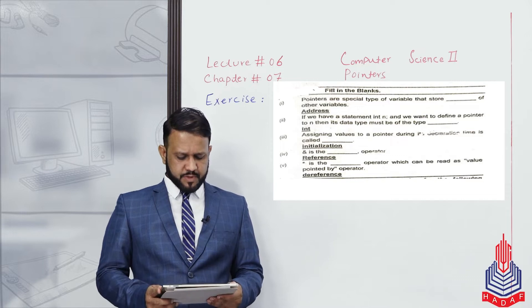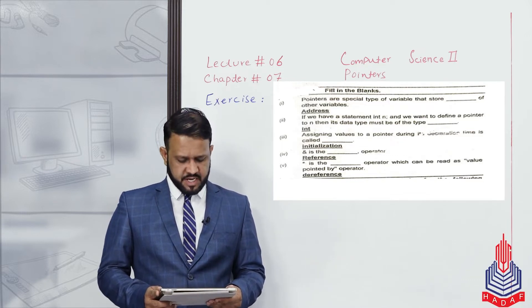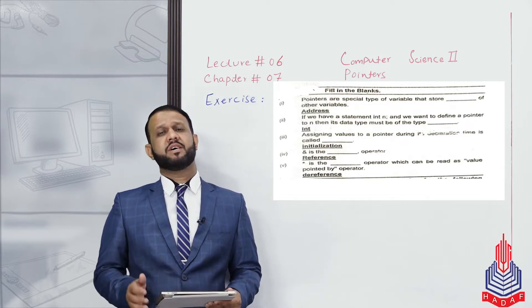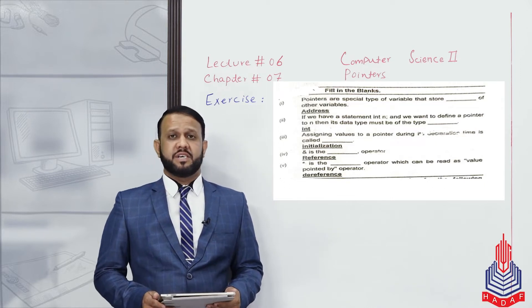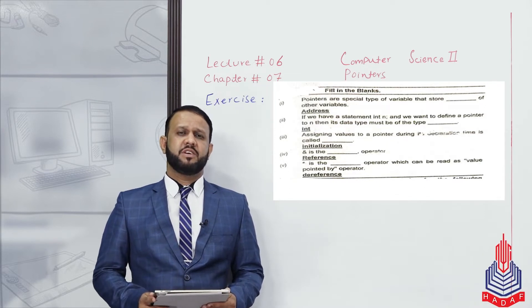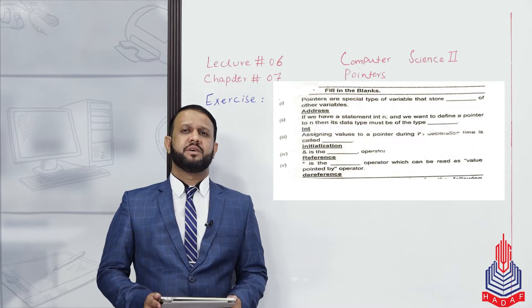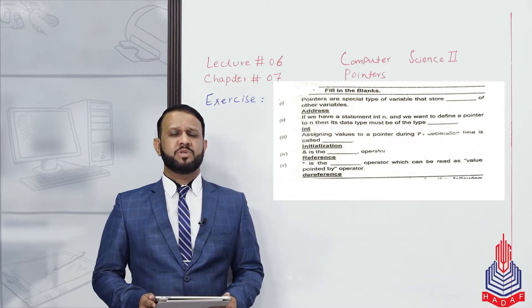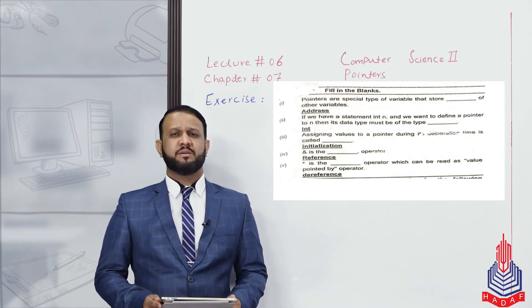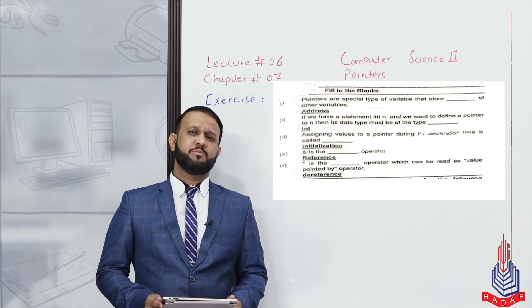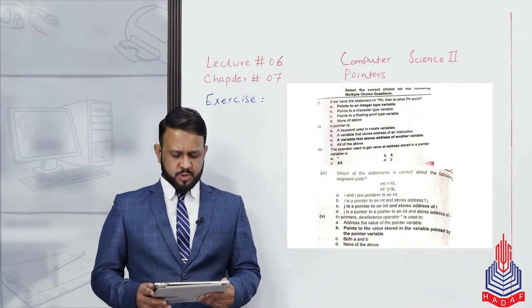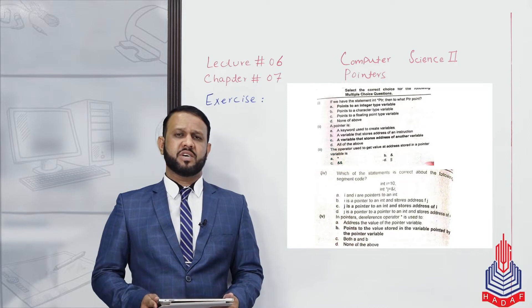Our last filling the blank: Star or asterisk is the dash operator, which can be read as 'value pointed by' operator. As I told you, the declaration of a pointer is similar to a variable declaration, but with a minor difference — before the name of the pointer we use the asterisk star symbol. This makes it a pointer variable, and this operator is the dereference operator.